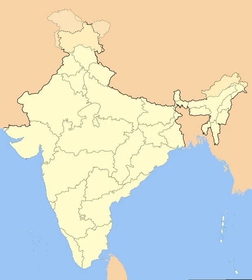The ten Part C states included both the former chief commissioner's provinces and some princely states, and each was governed by a chief commissioner appointed by the President of India. The Part C states were Ajmer, Bhopal, Bilaspur, Coorg, Delhi, Himachal Pradesh, Kutch, Manipur, Tripura, and Vindhya Pradesh.